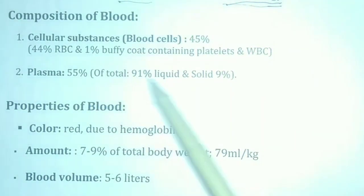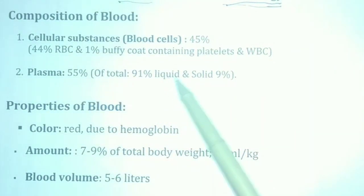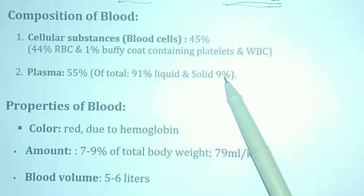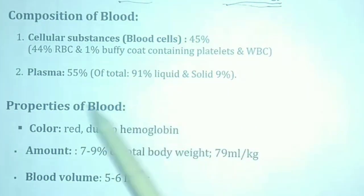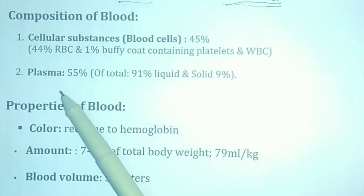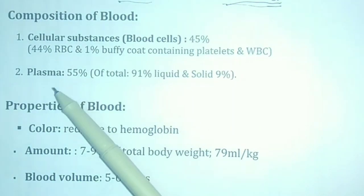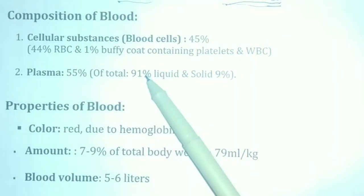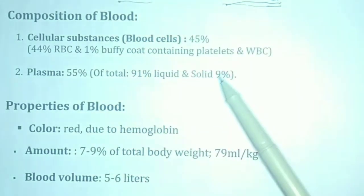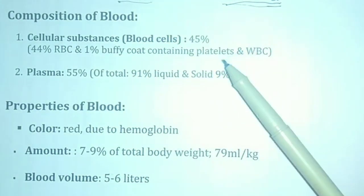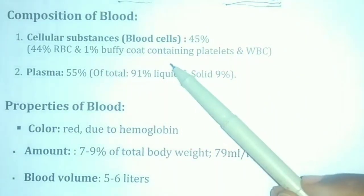Plasma consists of 91% liquid and 9% solid. This 55% plasma makes up the fluid portion of blood. This is the composition of the blood.